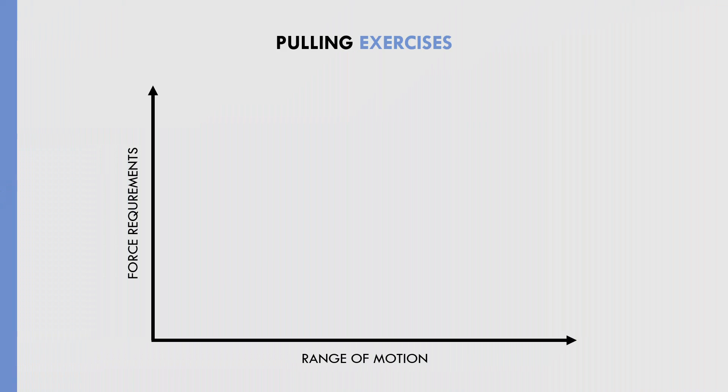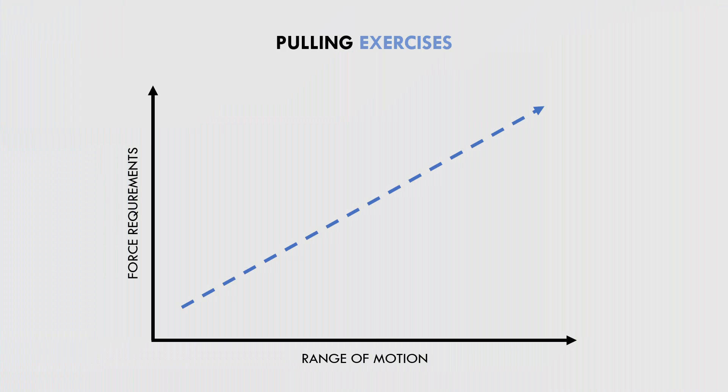Pulling exercises usually have the opposite — a descending tension curve, where the start of the lift is easiest and the end of the lift is hardest. For example, a seated cable row is easiest at the very start of the lift and becomes harder as the arms get closer to the body. Most standard pulling exercises naturally have this same tension curve.